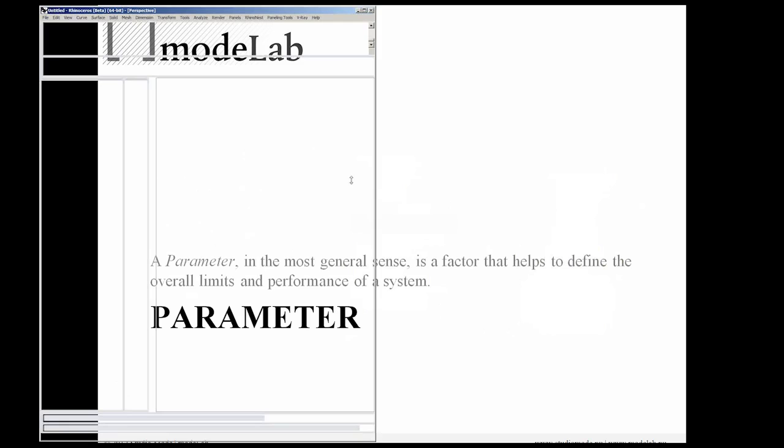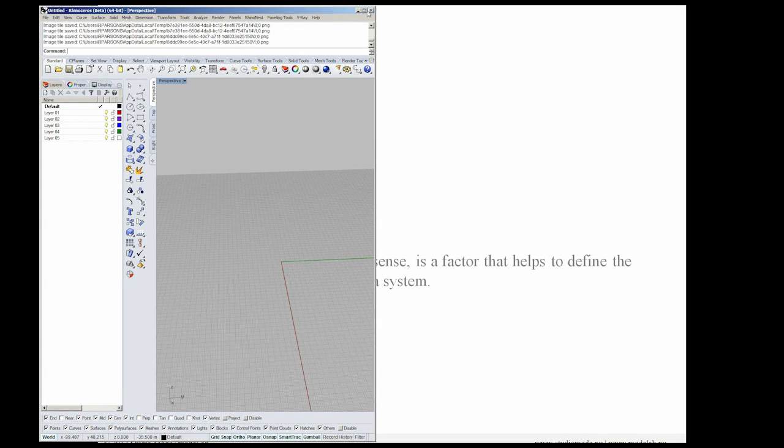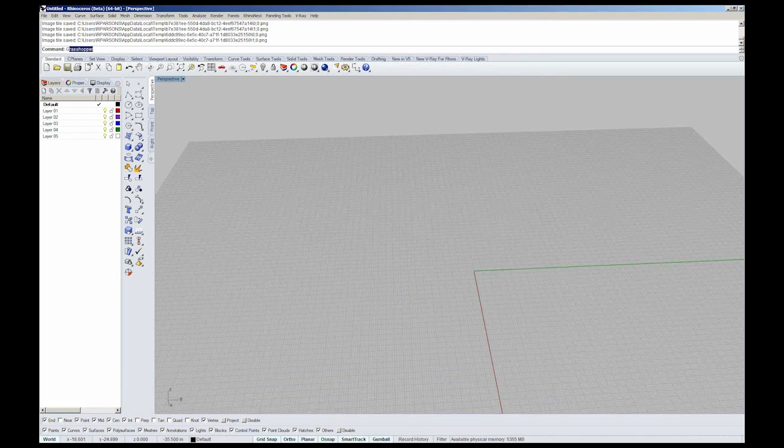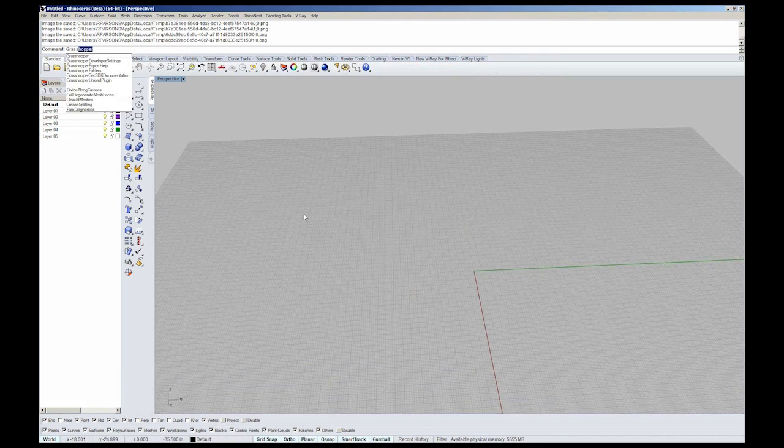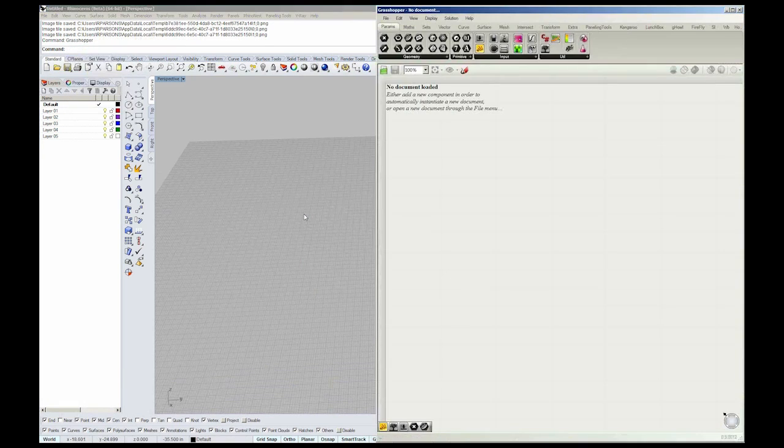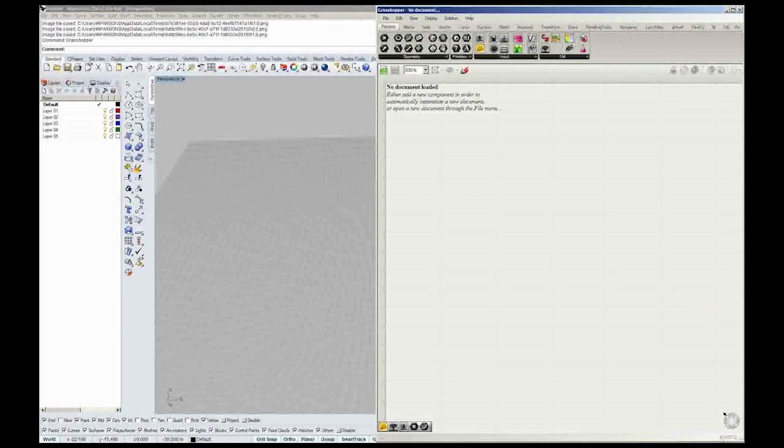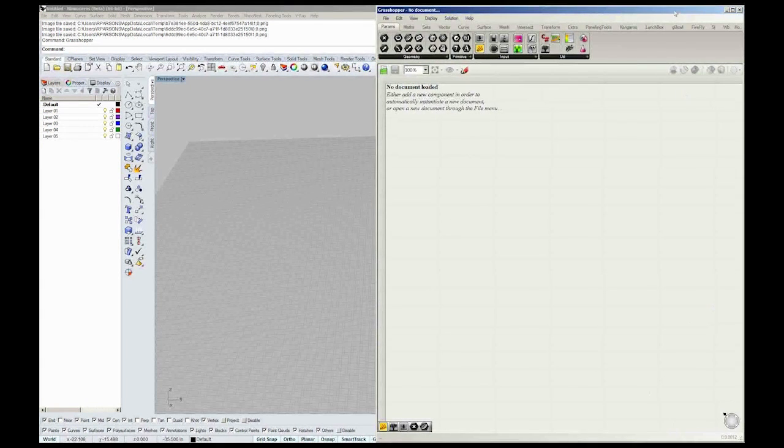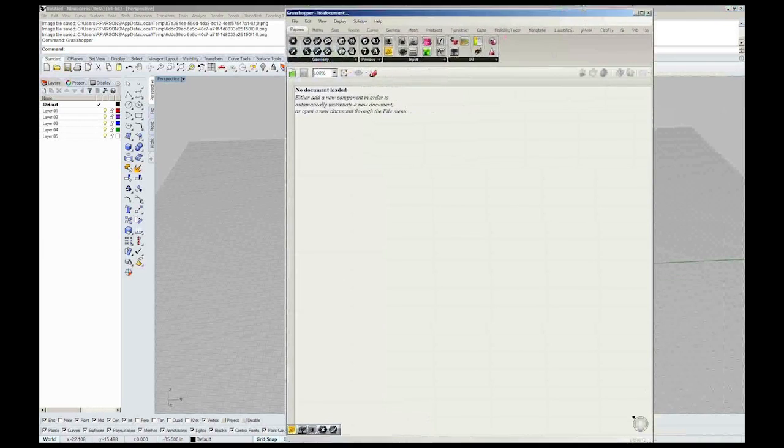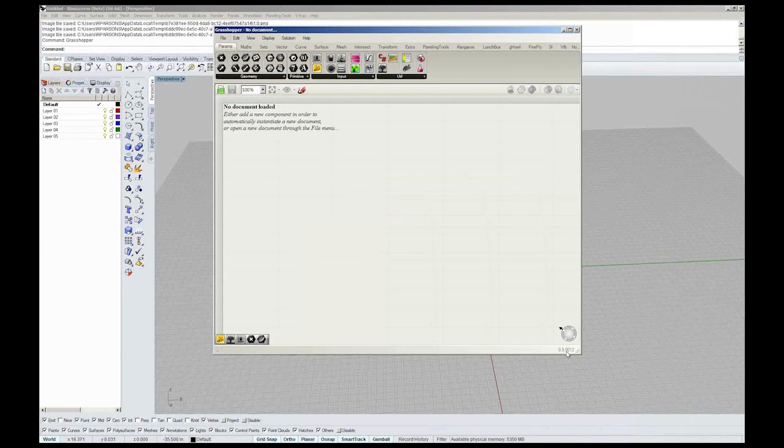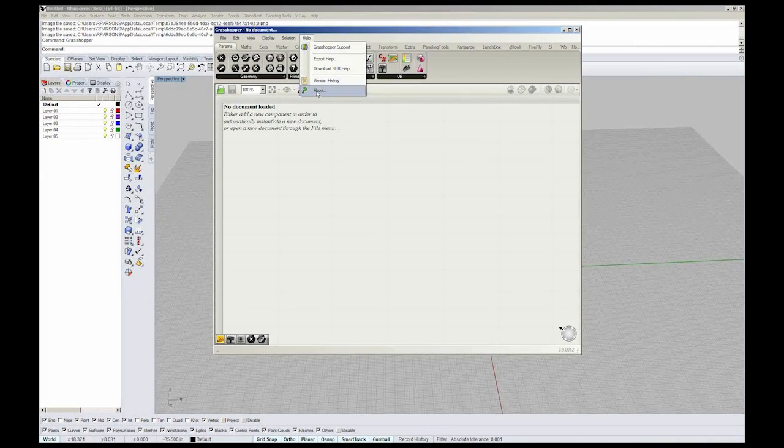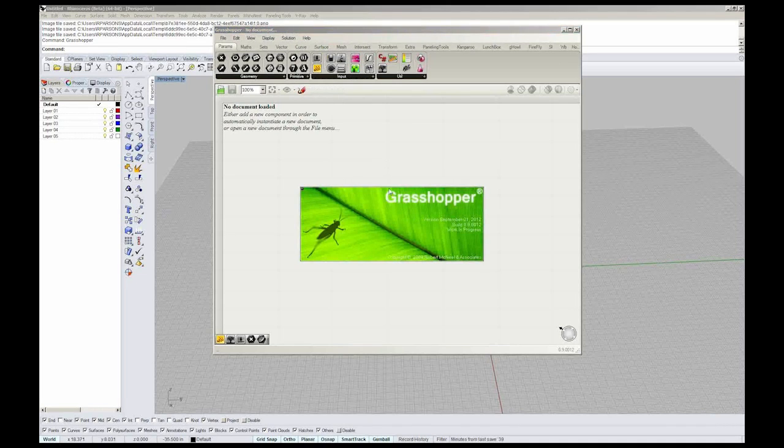Now if we bounce over to Rhino, one of the first things you're going to need to do is type in Grasshopper. When you do that, Grasshopper will open. Down here at the bottom, you'll want to double-check that you are using the most recent version, 9.0012. You can also get to that by going to Help and About.